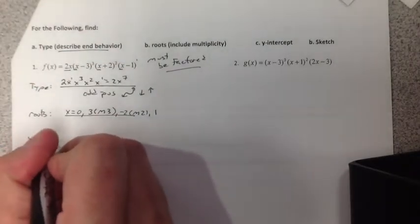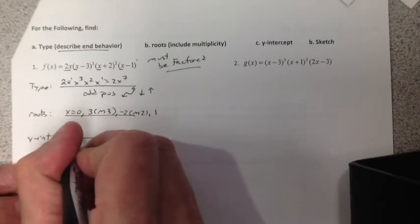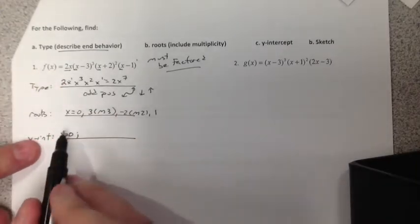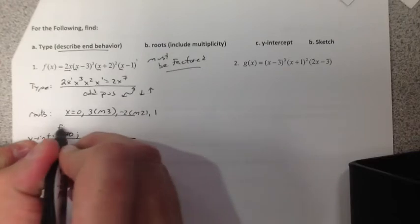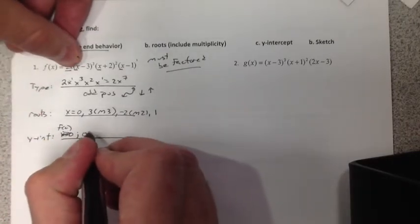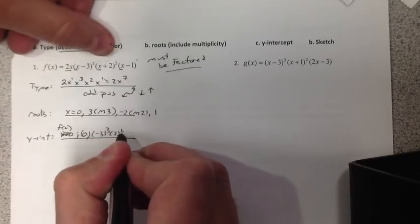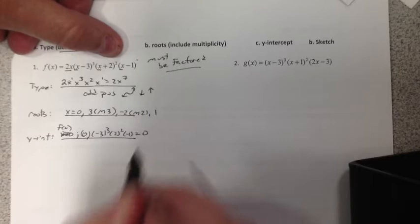Last, we need our y-intercept. To do that, just let x equal 0. If we let x equal 0, I guess I should write it this way, f of 0. We get 0 times negative 3 cubed, 2 squared, negative 1, which is just 0 again.